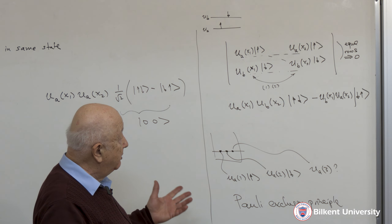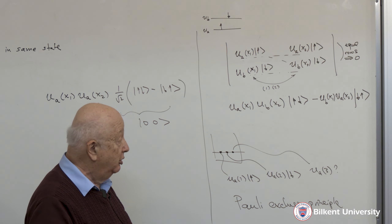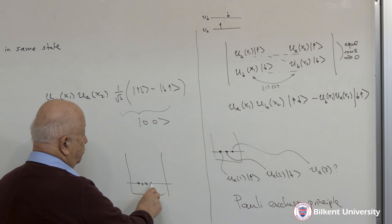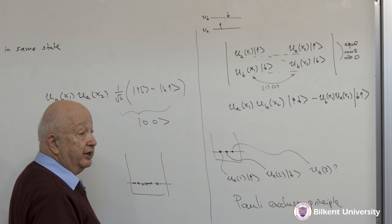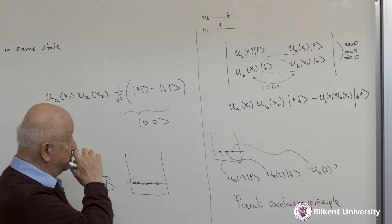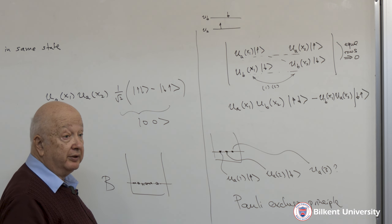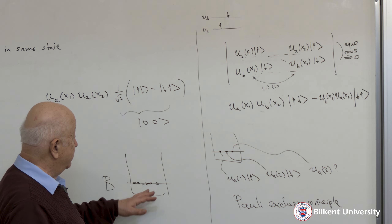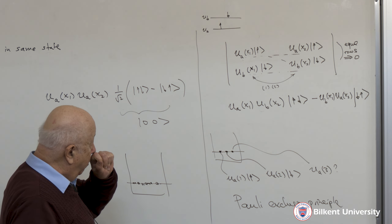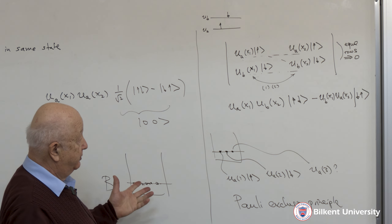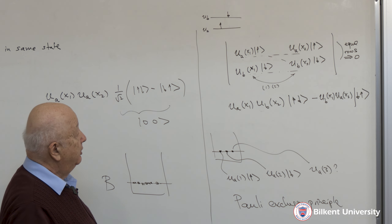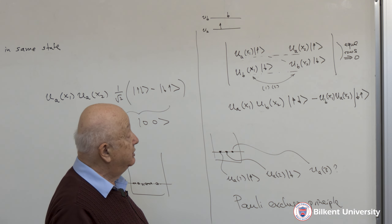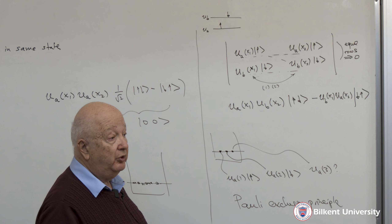For fermions, you cannot have particles filling the same energy and spin state simultaneously. For bosons, you can fill them up as much as you like — bosons are much more sociable objects, and especially at low temperatures all of them tend to go to the lowest energy levels and collapse into the lowest energy state, because there is no exclusion principle. For fermions you can put two of them in the same energy state but with spins in the singlet state. We'll meet again on Tuesday for two hours.